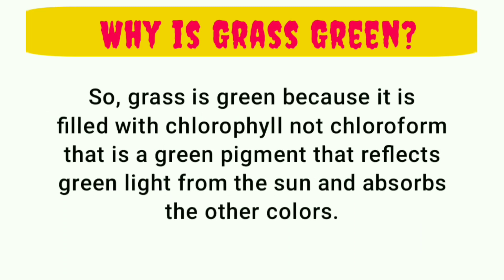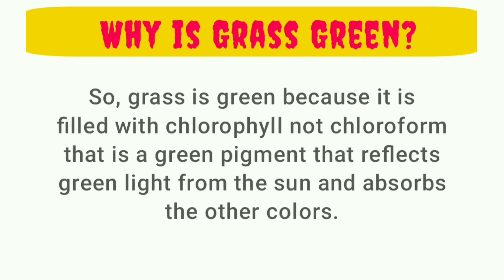So, grass is green because it is filled with chlorophyll — not chloroform — that is a green pigment that reflects green light from the sun and absorbs the other colors.